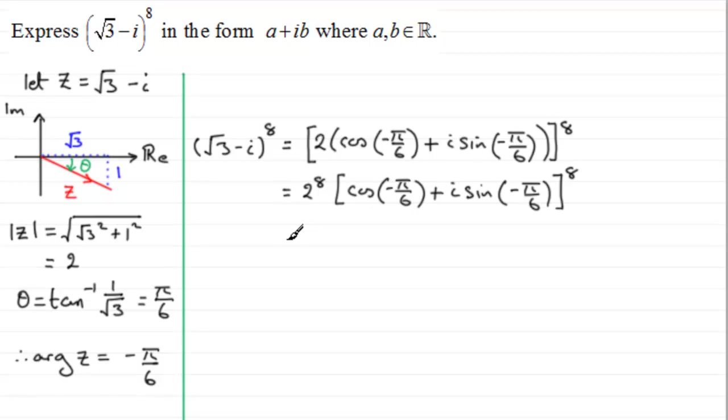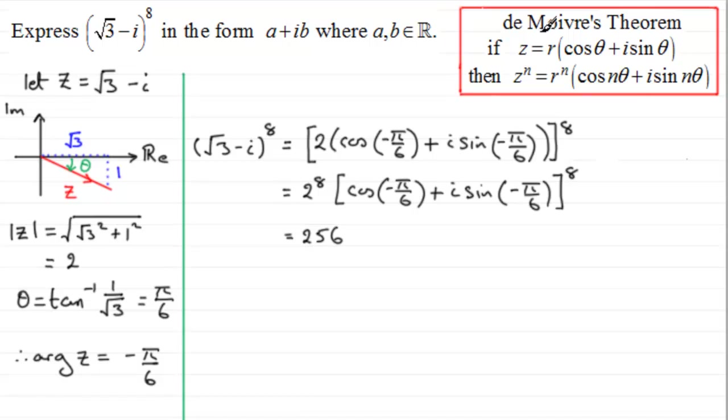Now 2 to the power 8 is 256. So put that there. But when it comes to expanding this to the power 8, what we can do is now use De Moivre's theorem. And as a reminder, remember for De Moivre's theorem, that is if you've got Z equals R cos theta plus i sine theta, then Z to the power n is equal to R to the power n cos n theta plus i sine n theta. So what we can do is we can take our power and multiply it now by the arg for the complex number here.